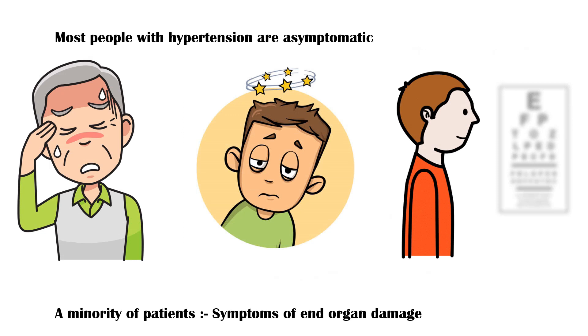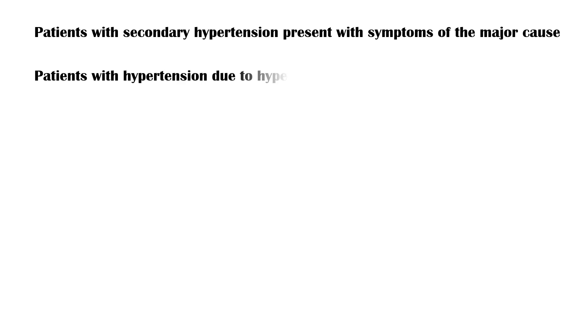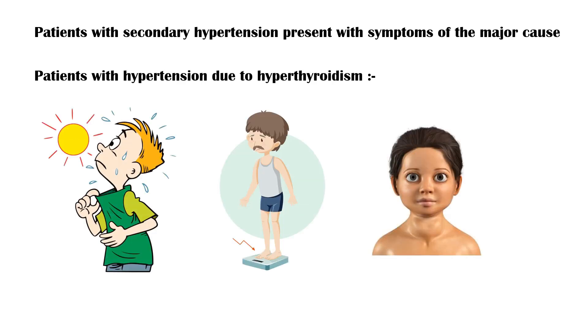Patients with secondary hypertension mainly present with symptoms of the major cause precipitating hypertension. For example, patients with hypertension due to hyperthyroidism will have symptoms of hyperthyroidism, including increased sweating, weight loss despite increased appetite, protruding eyes, etc.